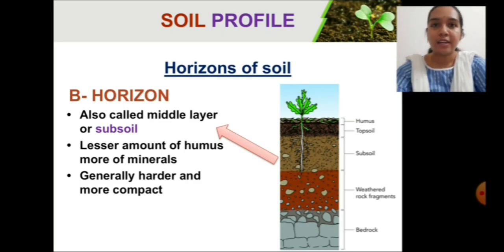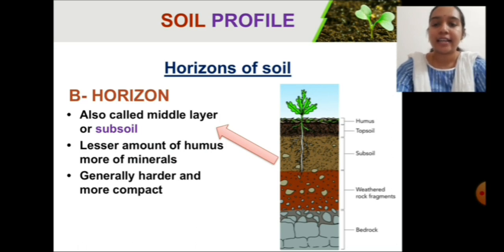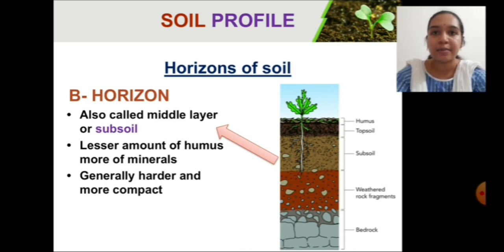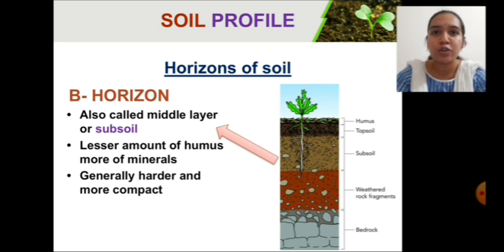Then comes the B horizon, also called subsoil. This is the area where the roots of large trees extend. Here the amount of humus is less and minerals are more. This layer is generally harder and not as soft in texture when compared to the A horizon. The subsoil is usually harder and more compact — it is a tightly packed layer of soil.